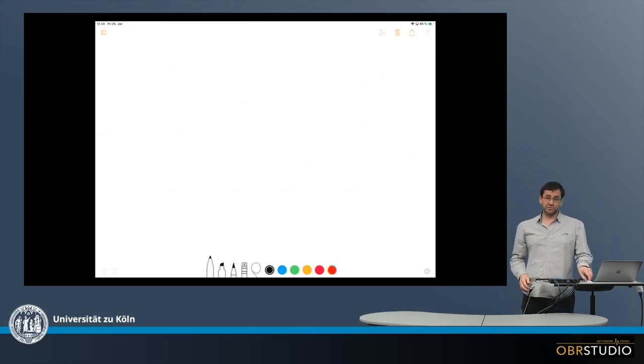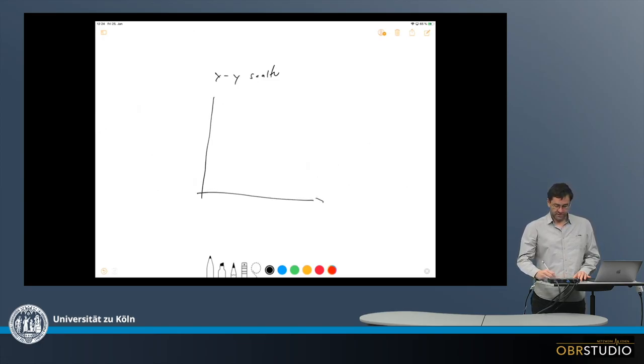The very likely most typical, popular, or most used plot is an XY scatter plot. And in this plot we have two axes, X and Y.